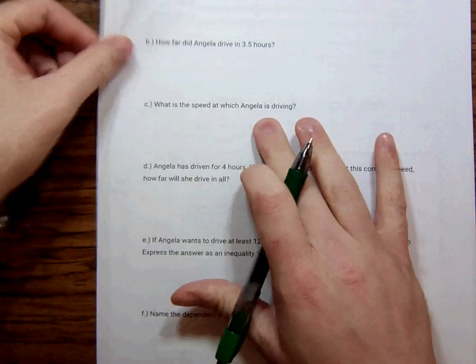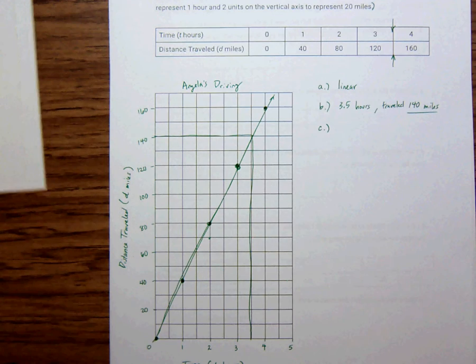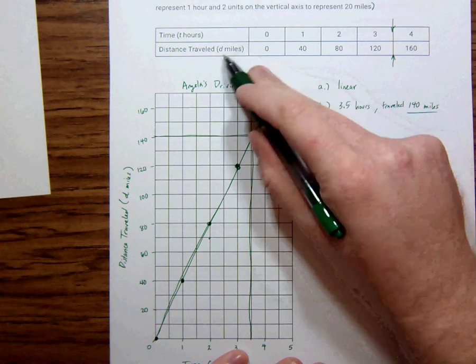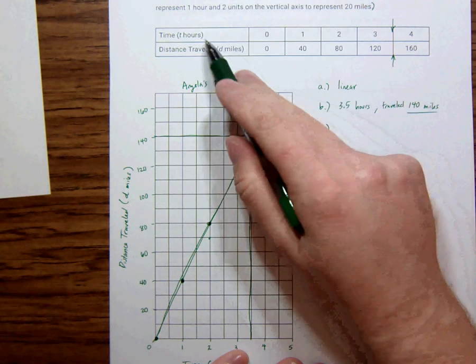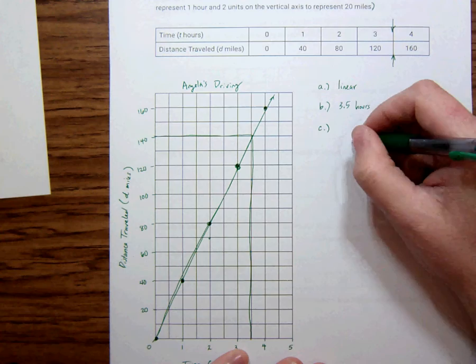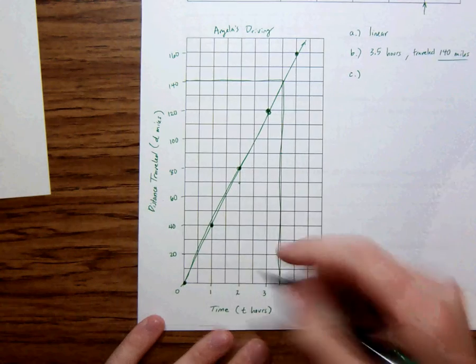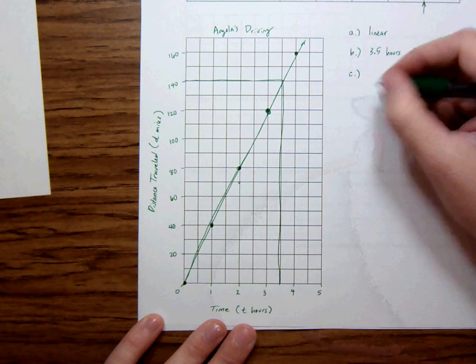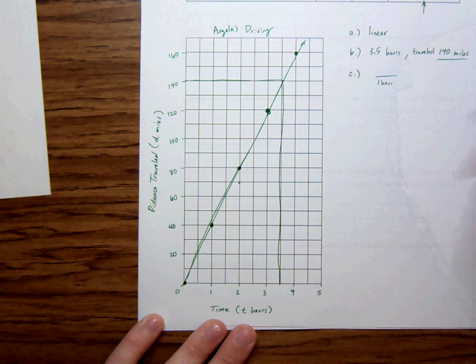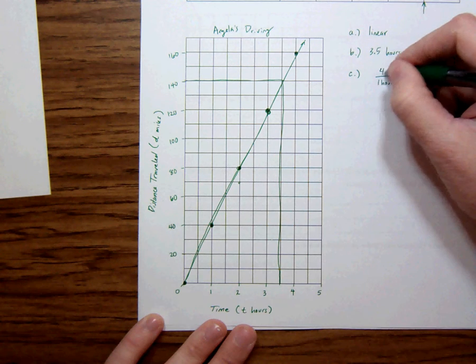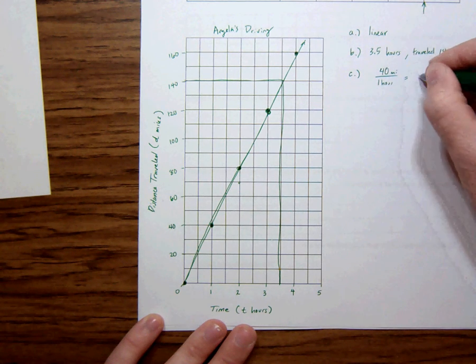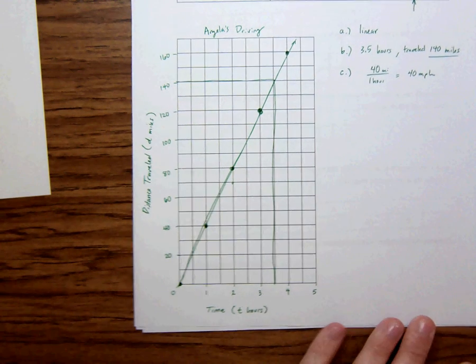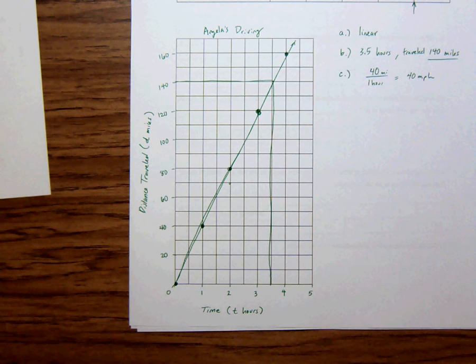So what is the speed at which Angela is driving? That's literally, look at your units. We have miles and we have hours. So on the independent variable, if that were 1, how fast would it be going? Because you're always going to constant speed in a linear graph. So in 1 hour, you traveled 40 miles. So this is literally 40 miles per hour. That's how fast Angela is driving. Decently simple.